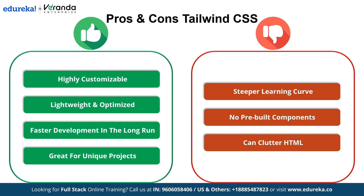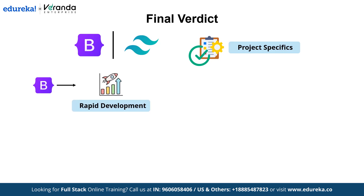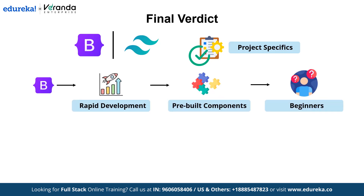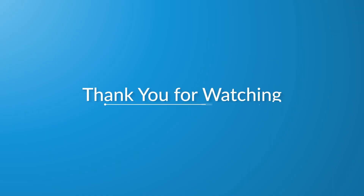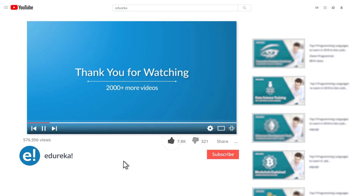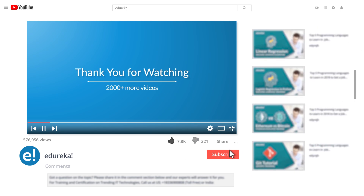So which is truly better? The choice between Bootstrap and Tailwind CSS depends on your project specifics. Bootstrap is ideal for rapid development with pre-built styled components, making it accessible for beginners and suitable for projects requiring standard UI patterns. Tailwind CSS offers greater design flexibility through utility classes, resulting in smaller, optimized CSS files, which is beneficial for performance-focused projects. Consider your project's requirements, timeline and desired level of customization when choosing between these two frameworks. I hope you enjoyed this video — please like it and comment any doubts or queries and we will reply at the earliest. Do look out for more videos in our playlist and subscribe to Edureka's channel to learn more.